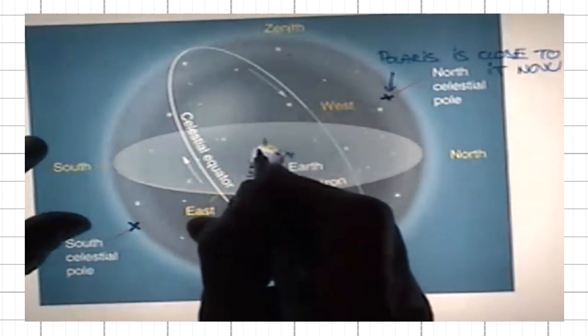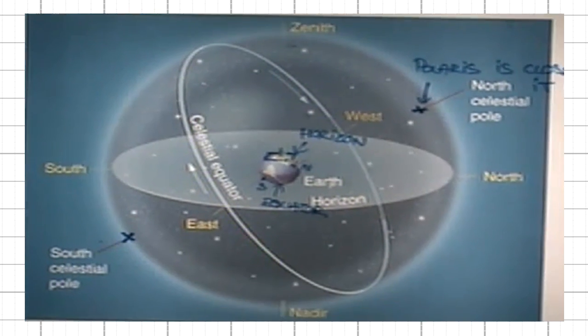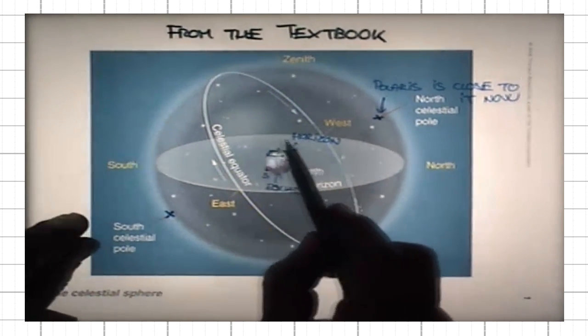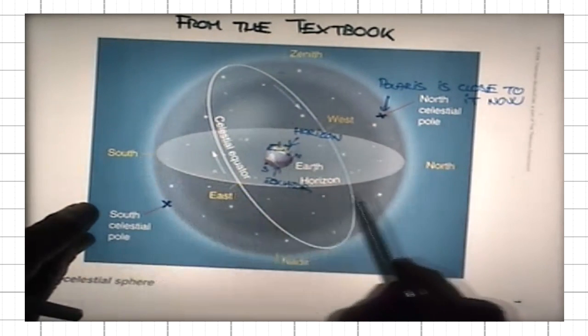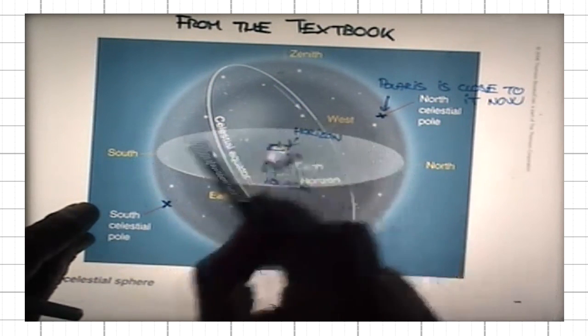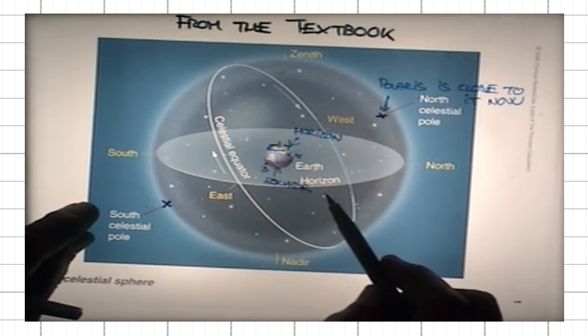Now, each observer has a horizon. This would be the horizon for this particular observer, who is roughly at our latitude — halfway between the North Pole and the equator. If one extends the observer's horizon so that the plane cuts the celestial sphere, it would cut it along a circle called the celestial horizon.